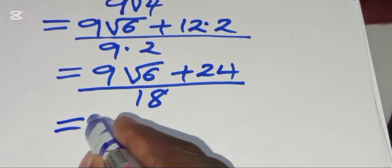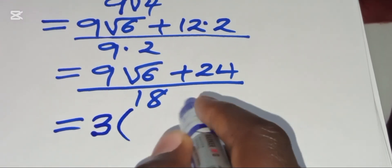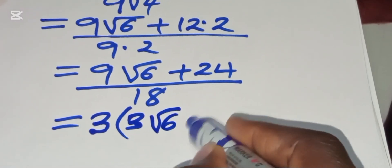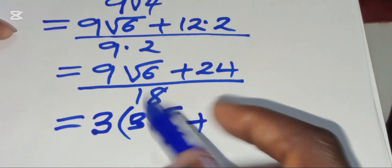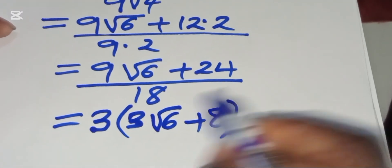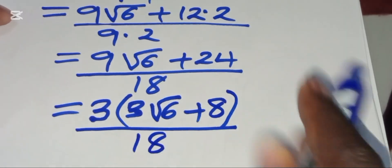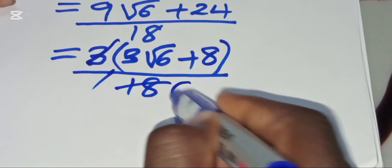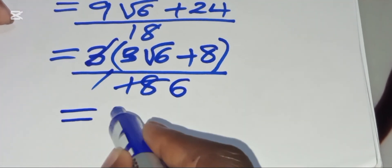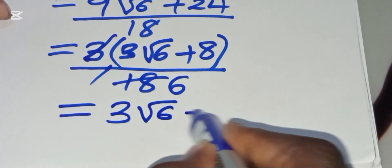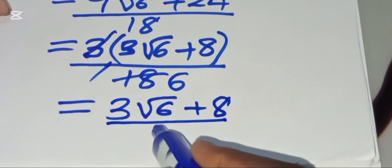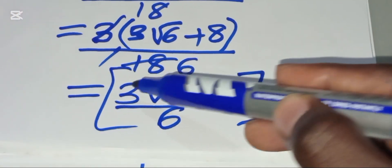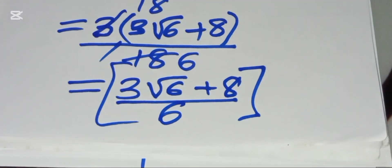We can factor the numerator as 3 into brackets: 3 times 3 is 9. Then dividing by 18, we simplify by a factor of 3 to get 3 square root of 6 plus 8, divided by 6. This is our solution: 3 square root of 6 plus 8, all divided by 6.